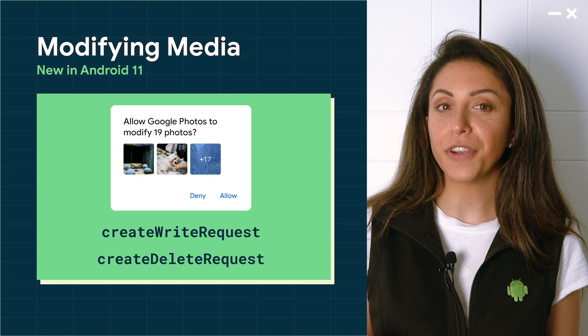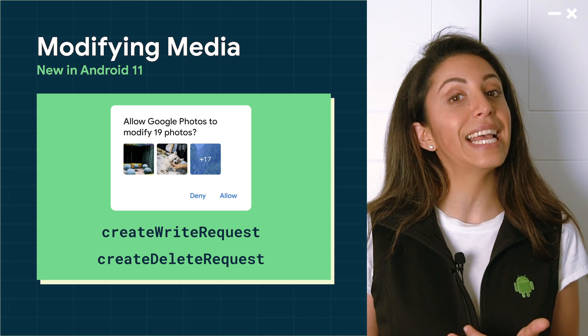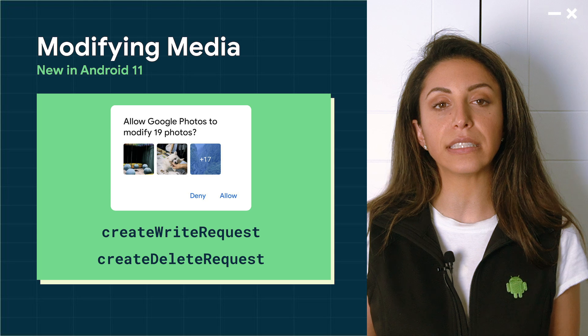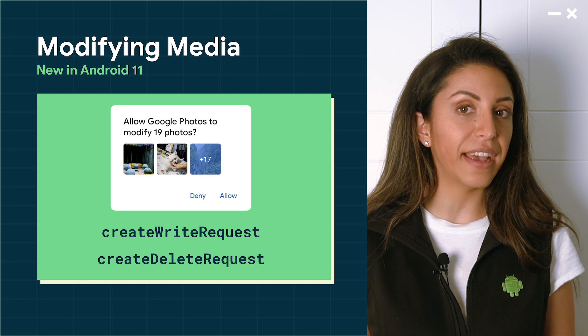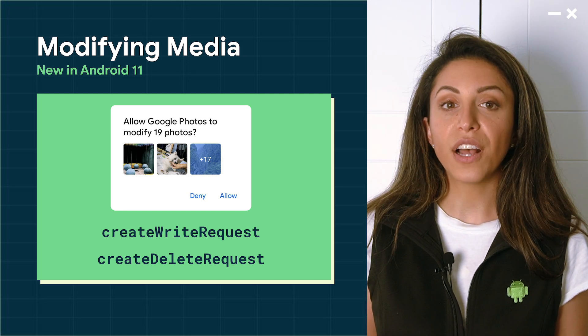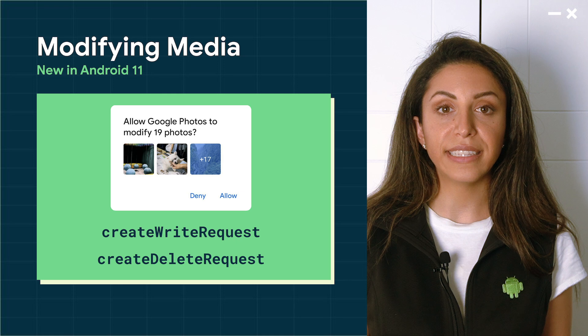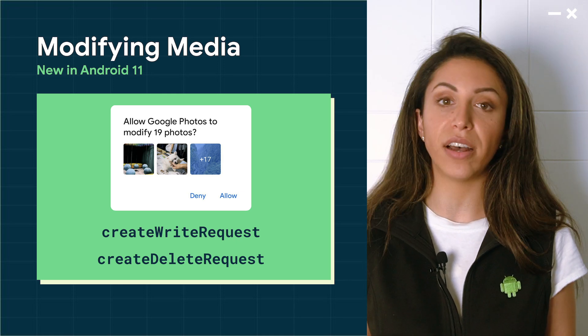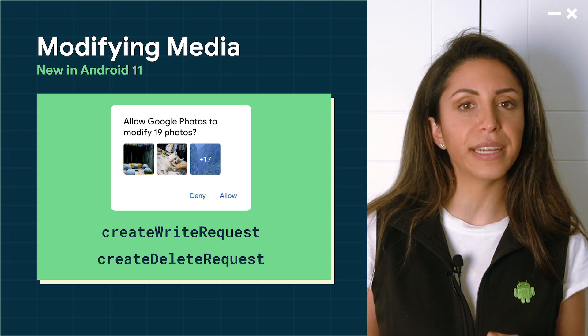MediaStore is the richest set of APIs for accessing shared files. With Android 11, we've added three significant new features. First, as part of scoped storage in the last release, we introduced a requirement in which apps needed to get user consent before modifying or deleting a file it does not own. For Android 11, we created new, easier-to-use APIs to get this consent. One is called CreateWriteRequest and CreateDeleteRequest. With these, apps can request consent for modifying several media files at once. If you already own the files that you want to modify, you don't need to request user consent to modify them.